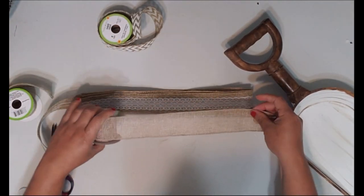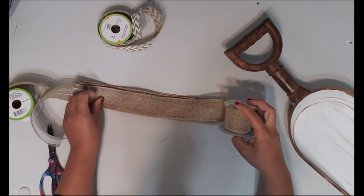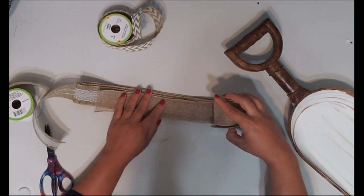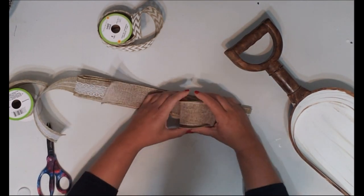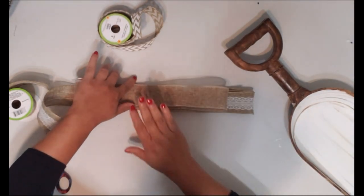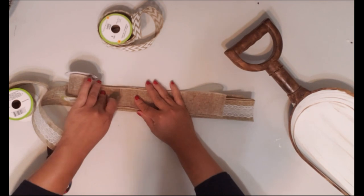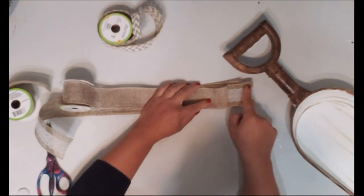Then we're going to place the regular burlap on top and we're just going to go a little smaller so that you could see. Like I said, I'm eyeballing this. I never measure the bows out.